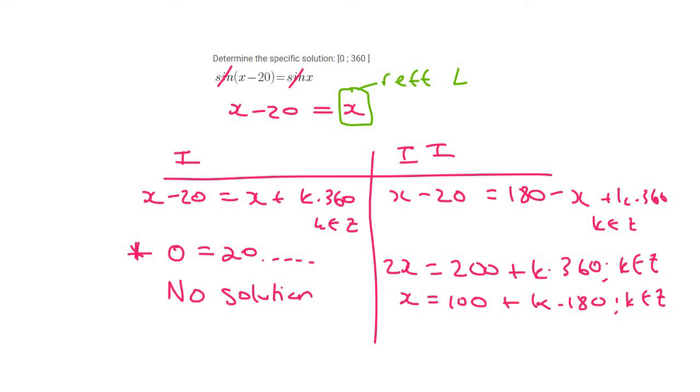Now that is called the general solution, but they've given us an interval to work in, so we need to go a little bit further. So we're going to plug in values for k, such as minus 1, 0, 1, 2, all the integer values. That's why we say integers.